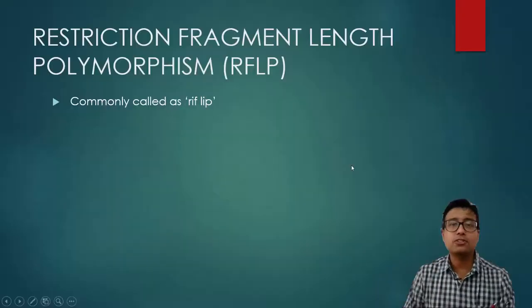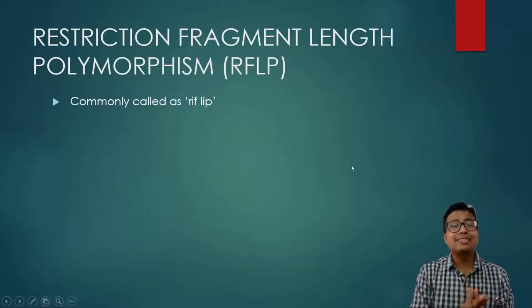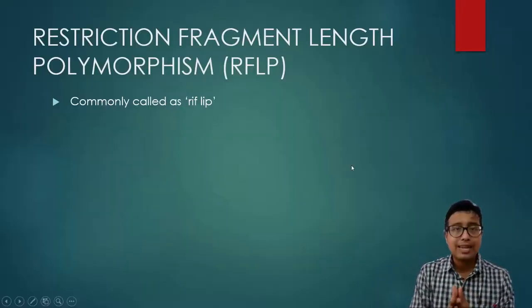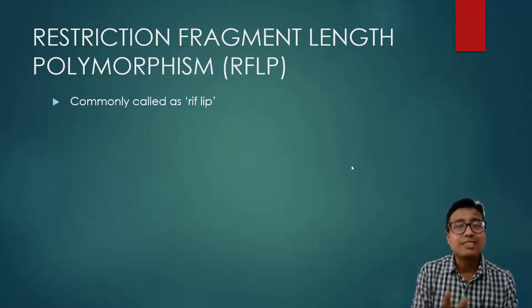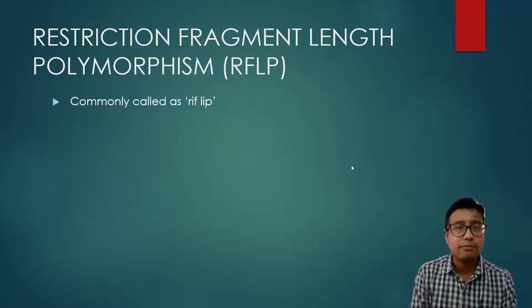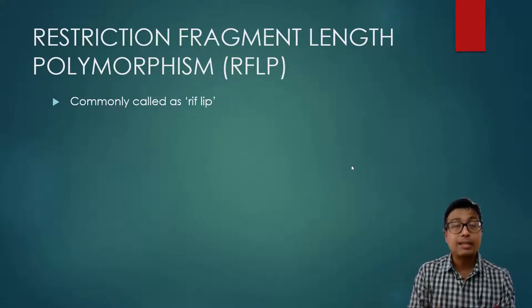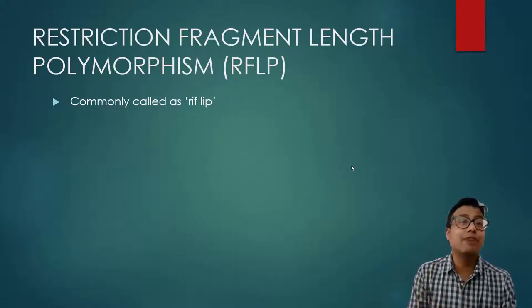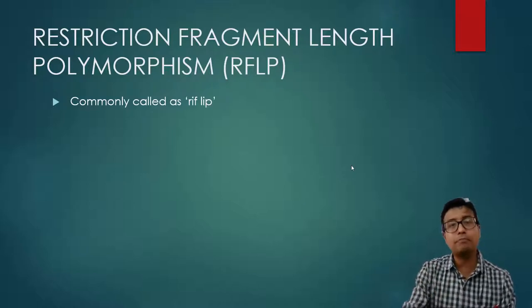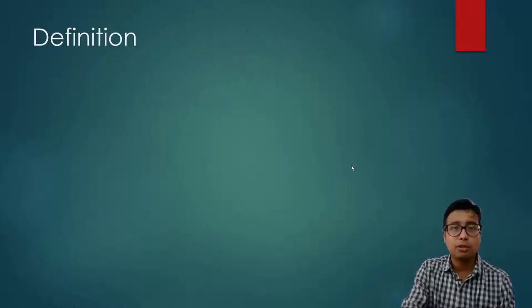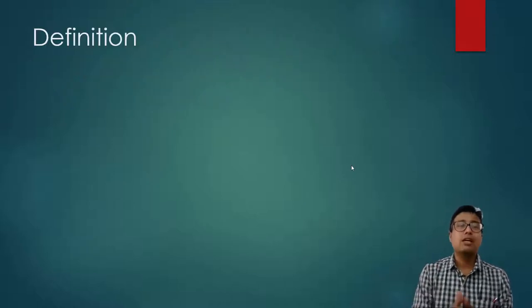Restriction Fragment Length Polymorphism is commonly abbreviated as RFLP, and it's also known as 'Reflip' — that's just the short form. So Reflip means Restriction Fragment Length Polymorphism.